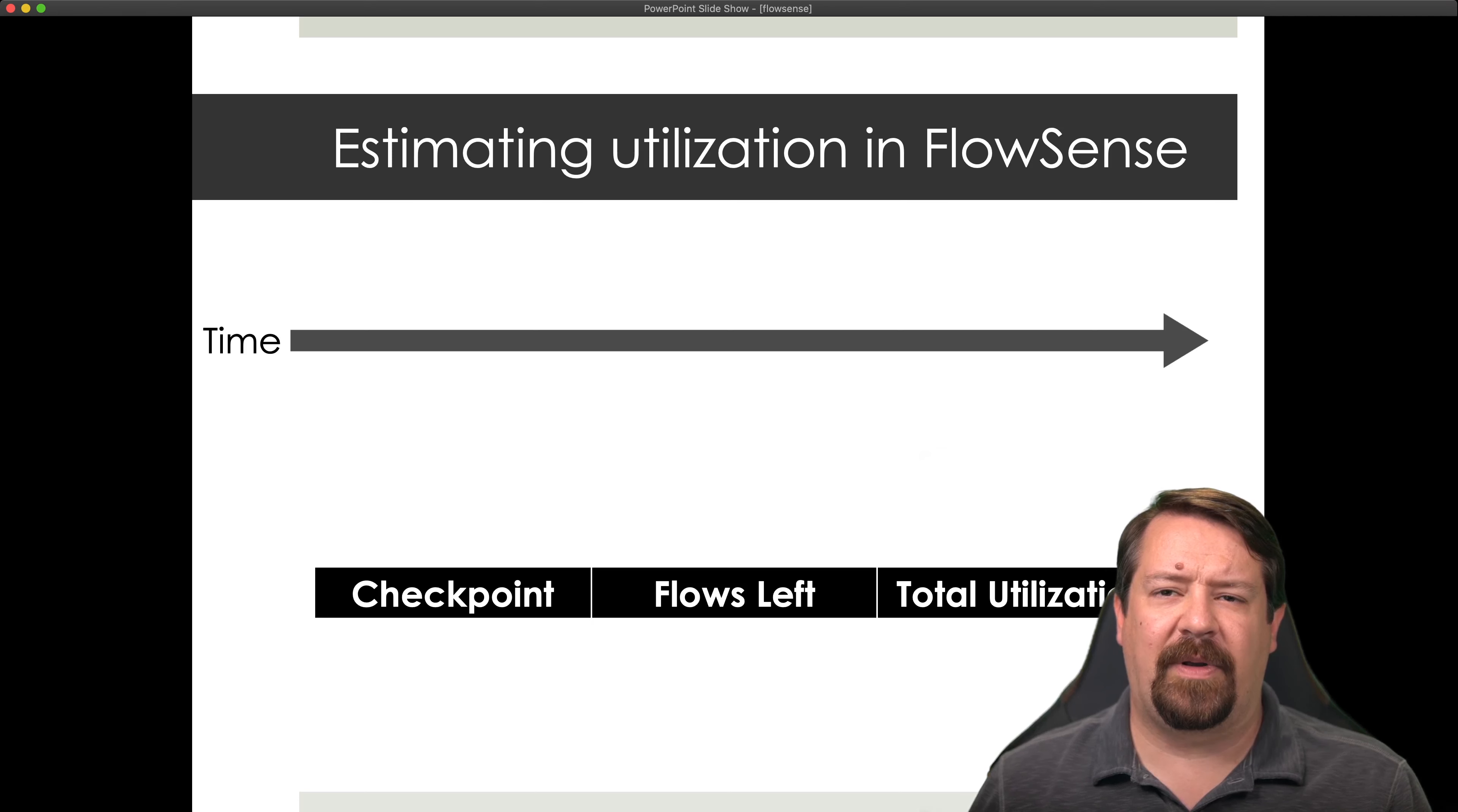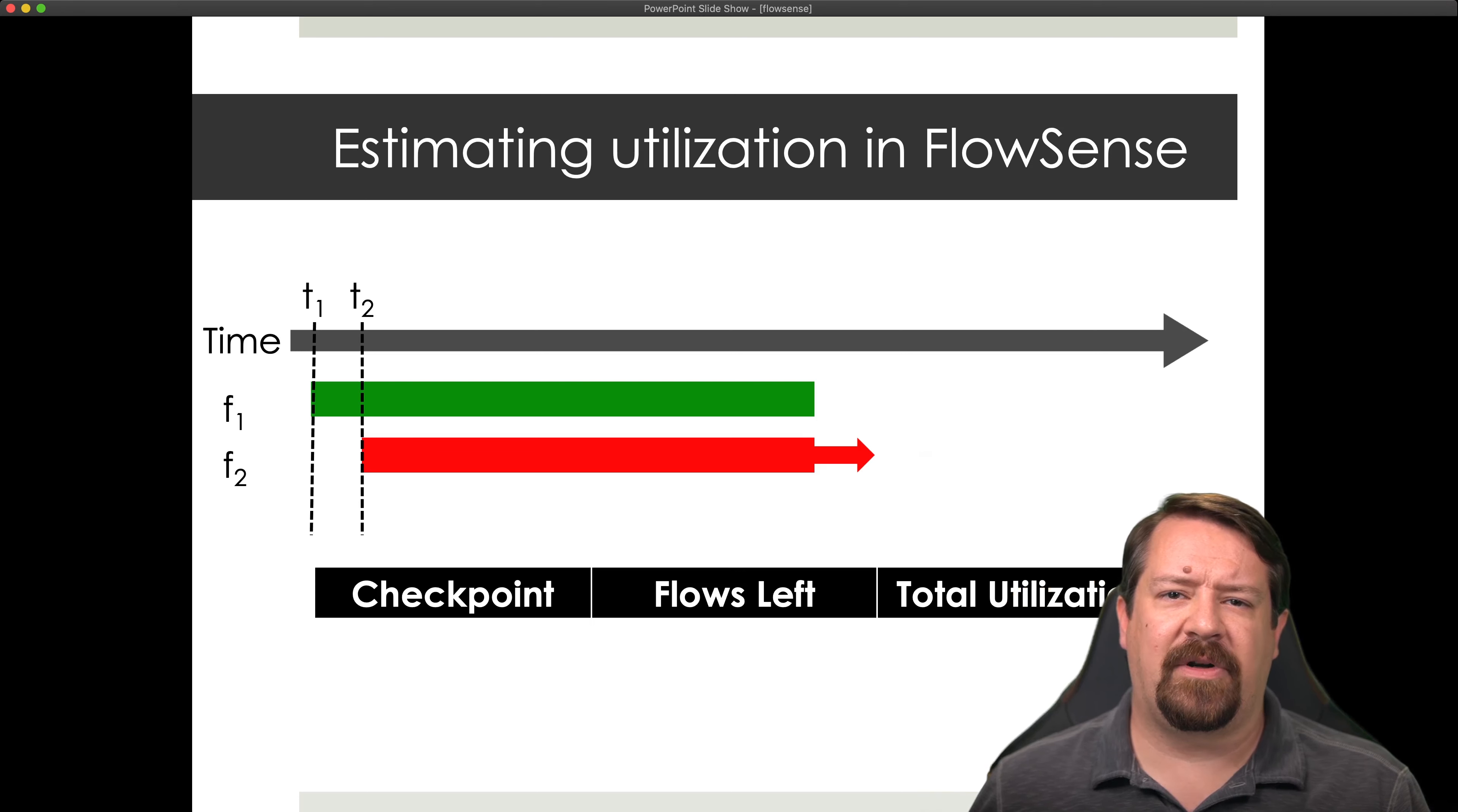So FlowSense, which is the approach being proposed by these authors, is something that runs exclusively in the controller and doesn't affect the operation of the switch in any way. It's going to keep track of the flows that are in operation on the switch based on the packet in messages that have been received. So here we see different flows starting at time one and time two and time three, and these are all running in parallel, consuming bandwidth in parallel on the link. And at time four, the first flow expires. And so now the controller is able to perform a partial estimate of the bandwidth consumption on the link.